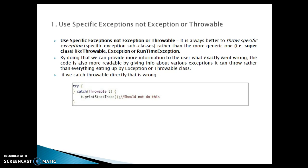It is always better to throw a specific exception. When we say a specific exception, that means a subclass of Exception, rather than a more generic one like a superclass such as Throwable, Exception, or RuntimeException. By doing that, we can provide more information to the user about what exactly went wrong. The code is also more readable by giving information about the various exceptions it can throw, rather than everything being caught by the Exception or Throwable class.